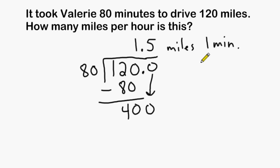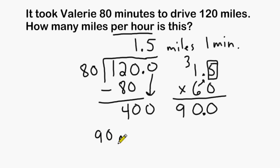However, the problem wants us to establish Valerie's speed per hour, and we know there are 60 minutes in one hour. So we may take 1.5 miles and multiply that by 60. If you have a zero in this position, simply drop that zero down and jump to the six right away. Six times five is 30. Place a zero here, carry the three. Six times one is six, plus three is nine. And because we have one place value after the decimal in the problem, the same must be true in our answer. So our decimal placement is right here. We would say that Valerie was traveling at a speed of 90 miles per hour.